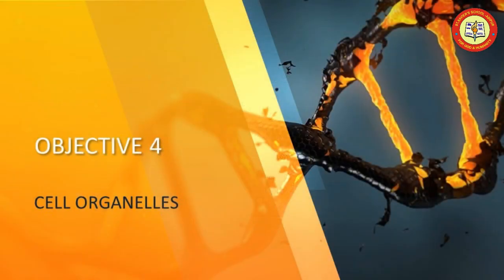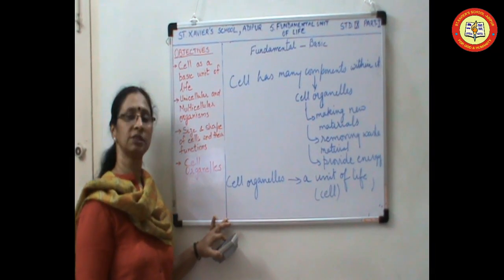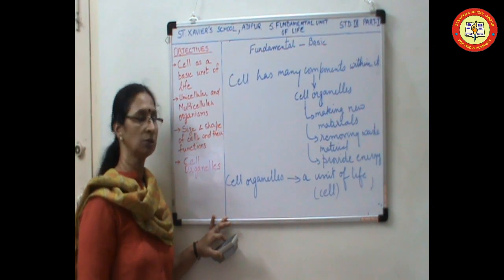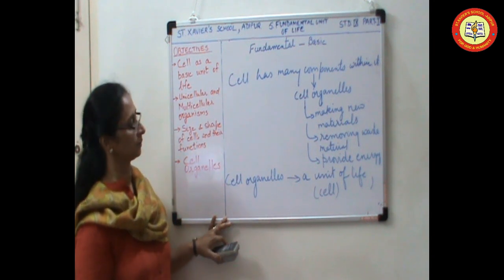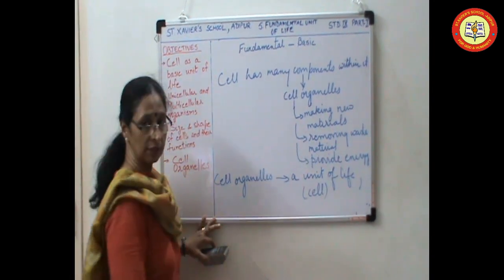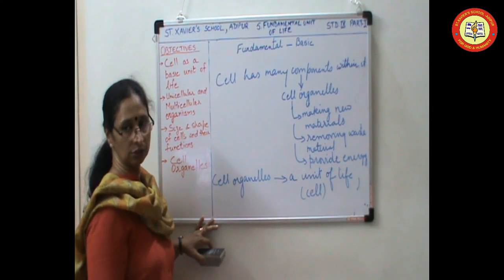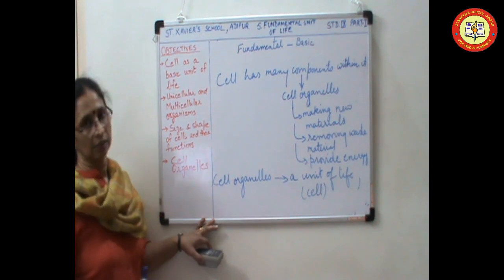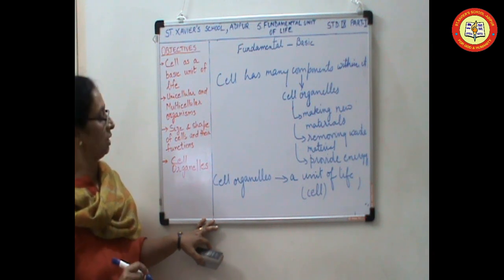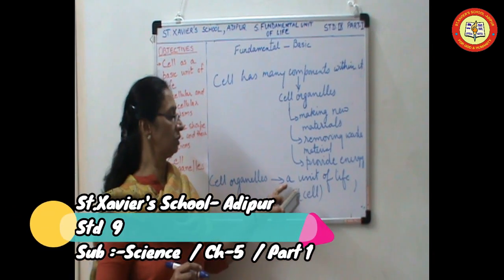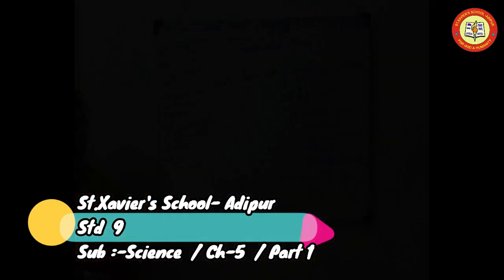A cell has many components within it. These components are called cell organelles. These organelles perform various specific functions. Like, making new materials in the cell. Removing waste materials from the cell. Providing energy to the cell. Cell can live and perform because of these cell organelles. Cell organelles constitute a unit of life. That is, cell.